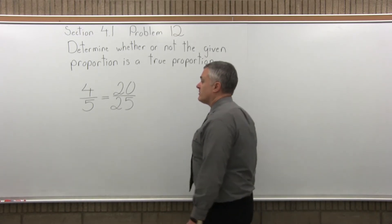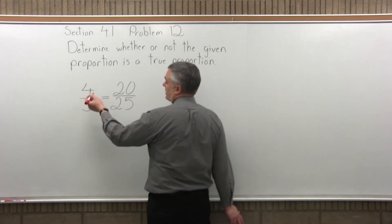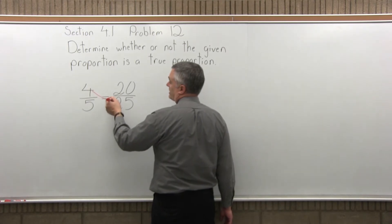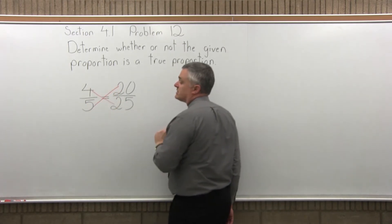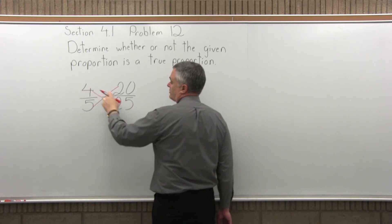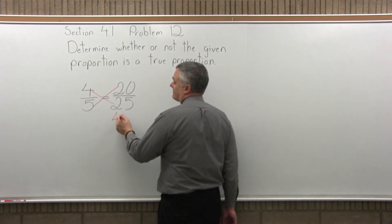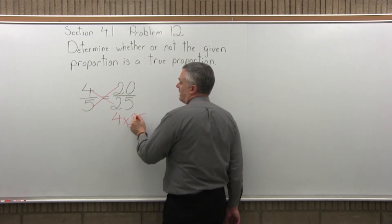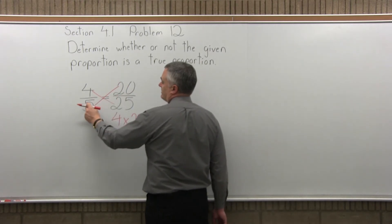So to determine if you have a true proportion, you want to find the cross products. You multiply across both ways and see if the result is equal. So in one path of the cross, you're going to do 4 times 25. And the other way, 20 times 5.